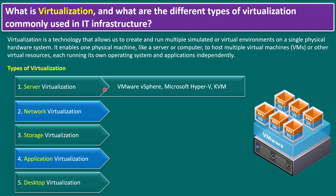For server virtualization, here are three examples: VMware vSphere, Microsoft Hyper-V, and KVM (Kernel-Based Virtual Machine). Just like vSphere, Hyper-V and KVM also allow you to create multiple virtual machines on one physical server. We also have other server virtualization options like Nutanix AHV and Oracle Virtual Machine. Multiple vendors are available, and based on customer needs we can choose the specific server virtualization software.